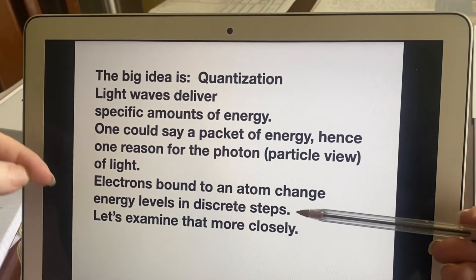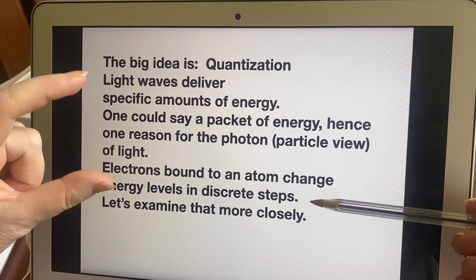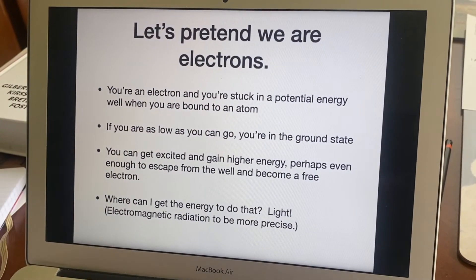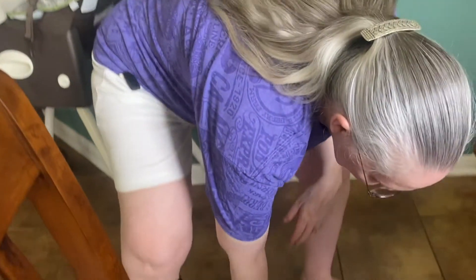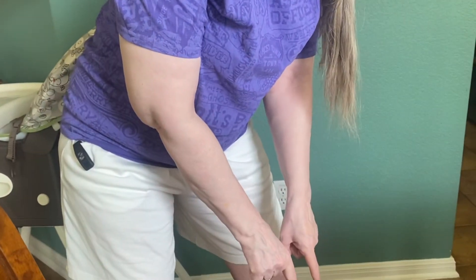The electrons in an atom are already in that atom — they are not free, they are bound. They change their energy level in steps, discrete steps. Now, those steps are not necessarily the same size — in fact, they're almost never the same size. So we're going to pretend we're electrons. You are an electron bound to an atom, which means you're in a potential energy well. You are maybe as low as you can go — if you're as low as you can go, you are in the ground state. Not every electron in an atom is in the ground state because there's only so much room down there. You might be a little higher, but you're still not up at the level where you could be a free electron and escape the atom altogether.